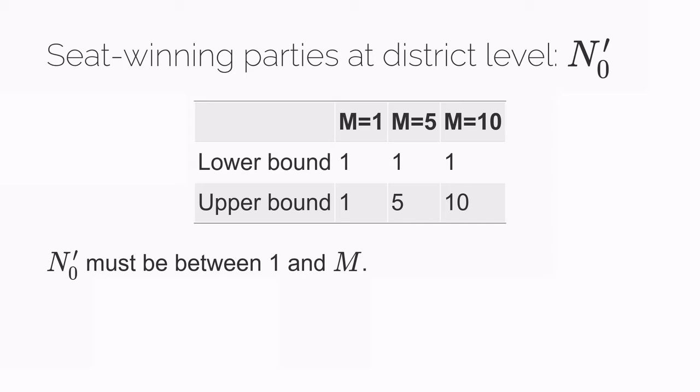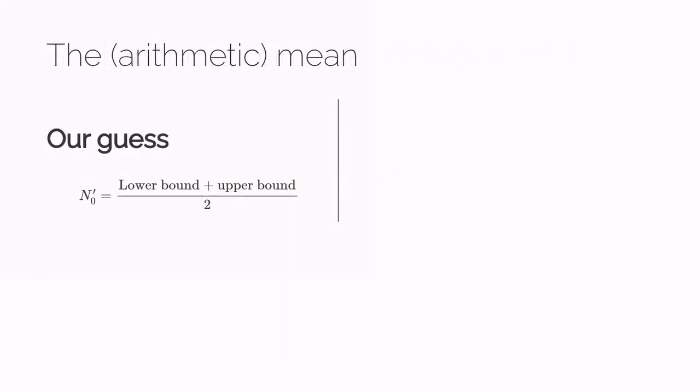We might think that a good guess as to the number of seat winning parties could involve blending or averaging the lower and upper bound. For example, you might take the arithmetic mean of these two numbers. We'd add them together and divide by two.